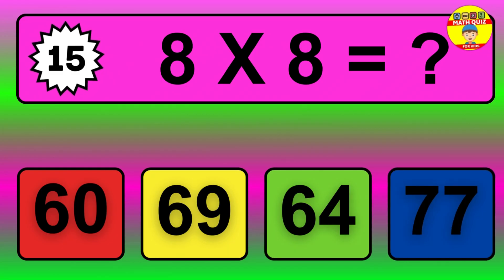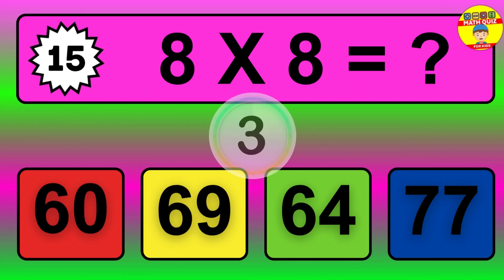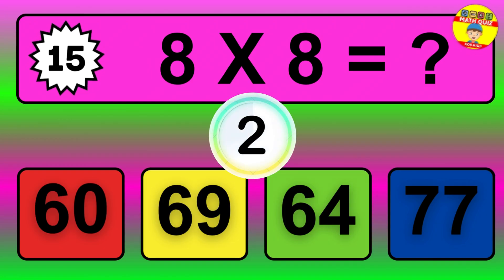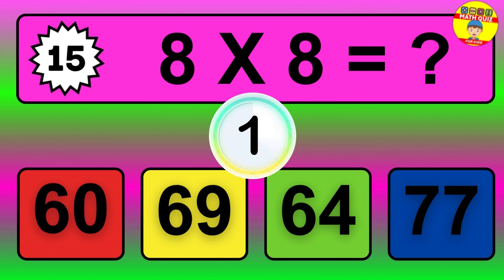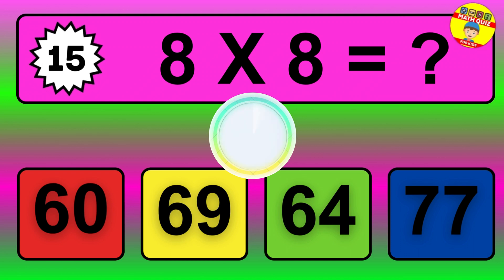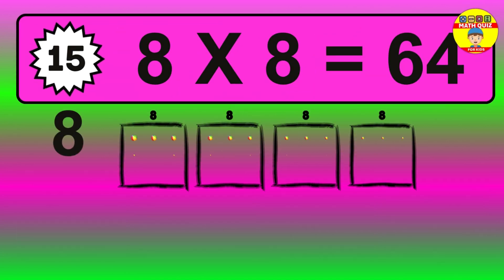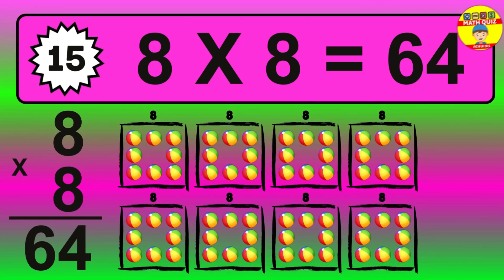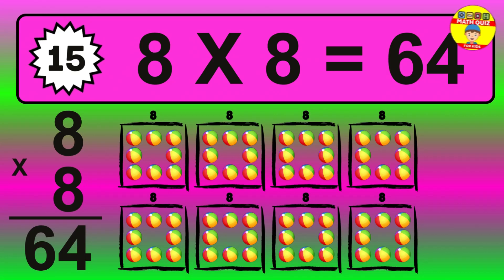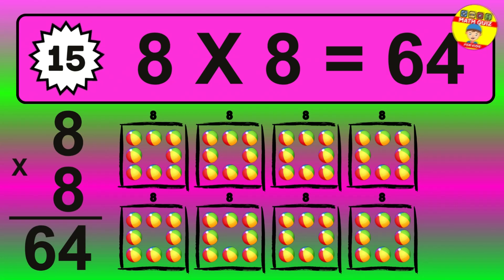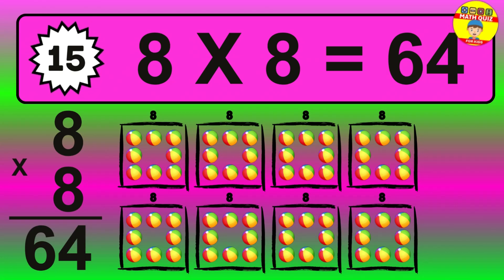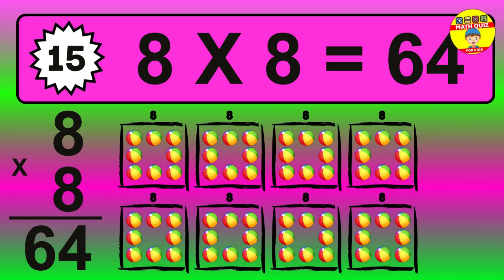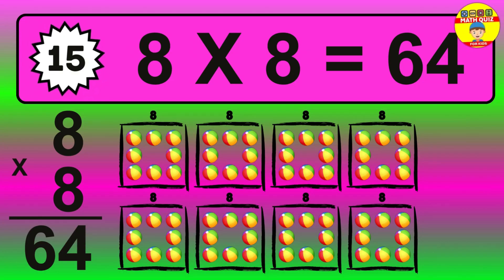Question 15. 8 times 8 equals what? The answer is 8 times 8 is 64. To calculate, we have 8 groups with 8 balls each one. So, how many balls do we have? 64 balls.